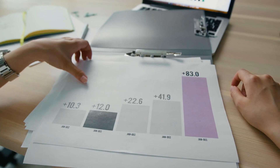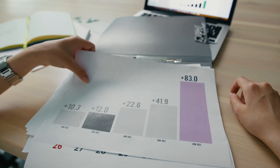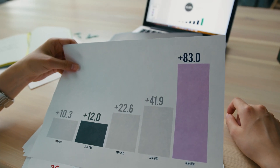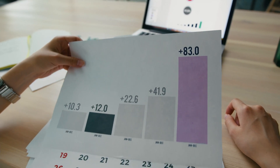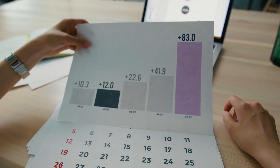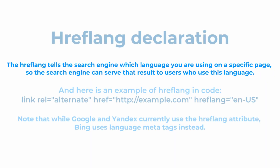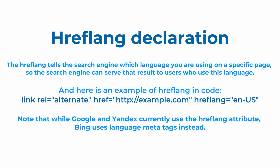This will influence your bounce rate by making sure that the right audience lands on the right version of your page. Keep in mind that while Google and Yandex currently use the hreflang attribute, search engine Bing uses language metatags.